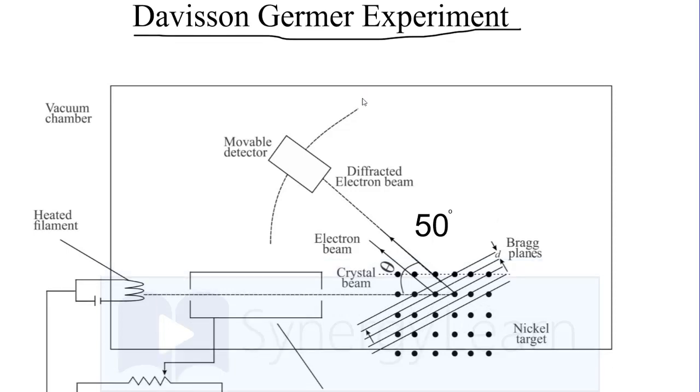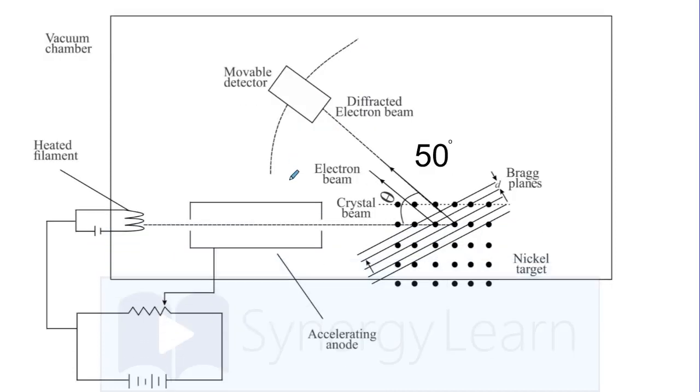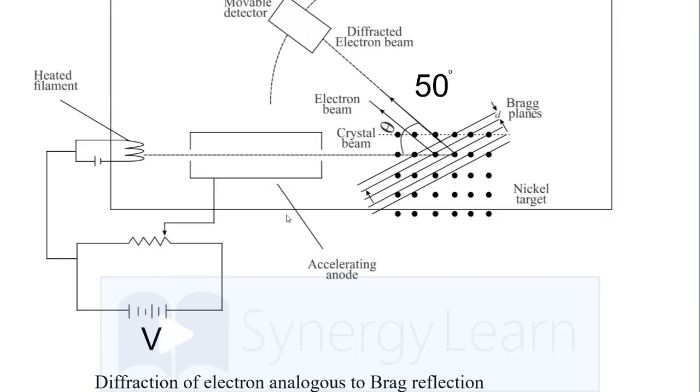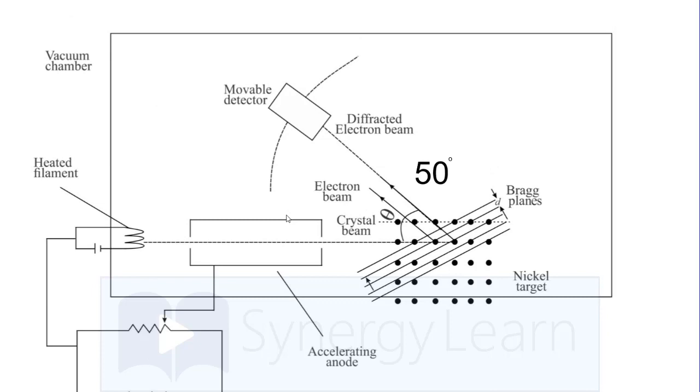As you know, light has dual nature, particle and wave, and later it was thought that all other particles also have wave nature, that is dual nature, and you are familiar with this relation lambda equals h by p. Here we have an attempt to establish wave nature of electron as we know that electrons are particles.